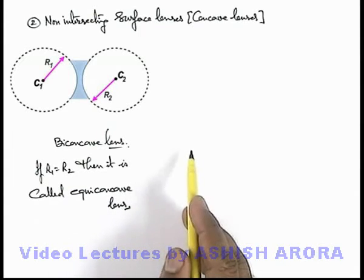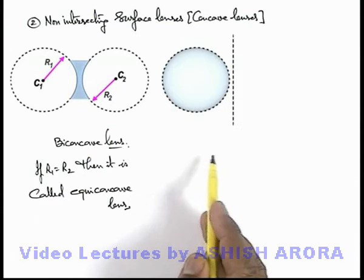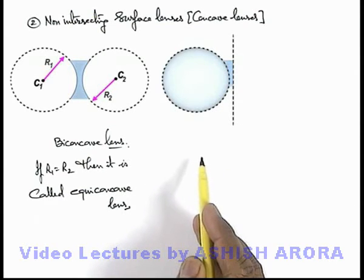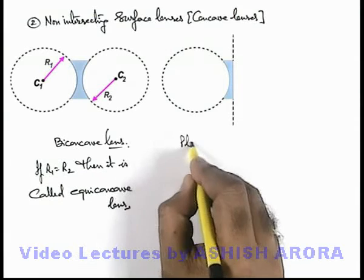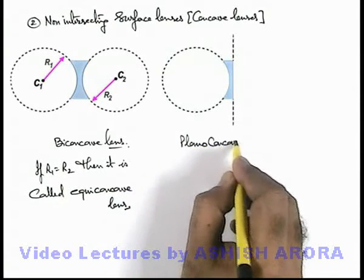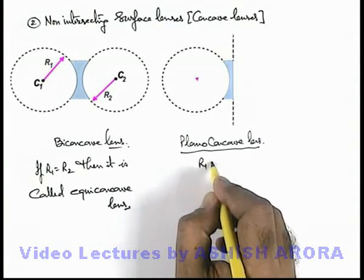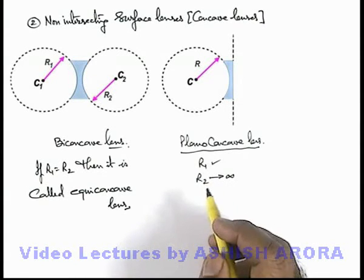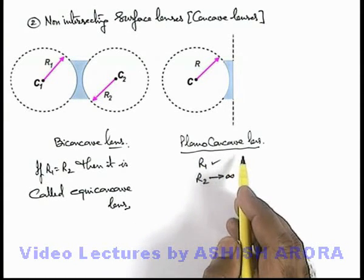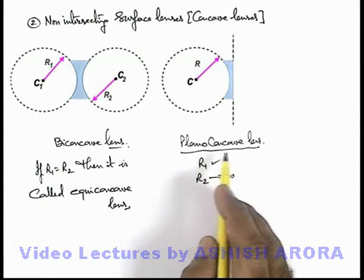Looking at another category: when there is a spherical surface and a plane surface which are not intersecting each other, and the region between the 2 is filled with a transparent media, the region bounded by 2 non-intersecting surfaces is termed as a plano-concave lens. There is one radius of curvature and the other radius tends to infinity. Unlike the plano-convex lens where the 2 surfaces intersect, in the case of a plano-concave lens the surfaces do not intersect.